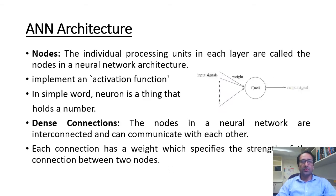The individual processing units in each layer are called the nodes in the neural network architecture. The nodes basically implement an activation function which, given an input, decides whether the node will fire or not. The nodes in the neural network are interconnected and can communicate with each other. Each connection has a weight which specifies the strength of the connection between two nodes.